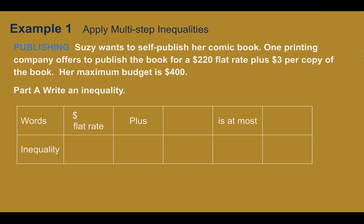Example one, apply multistep inequalities. Our real context here is publishing. Susie wants to self-publish her comic book. One printing company offers to publish the book for a $220 flat rate, plus $3 per copy of the book. Her maximum budget is $400. Part A, write the inequality. So we're going to write our inequality for the cost of this. In words, there's a $220 flat rate, plus $3 per copy, and then she can spend at most because her maximum budget is $400.